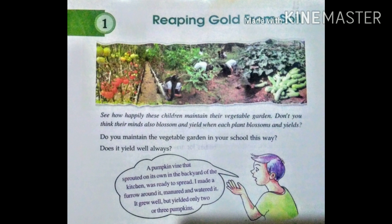See how happily these children maintain their vegetable garden. Don't you think their minds also blossom and yield when each plant blossoms and yields? Do you maintain the vegetable garden in your school this way? Does it yield well always? Dear friends, here is a story for you.